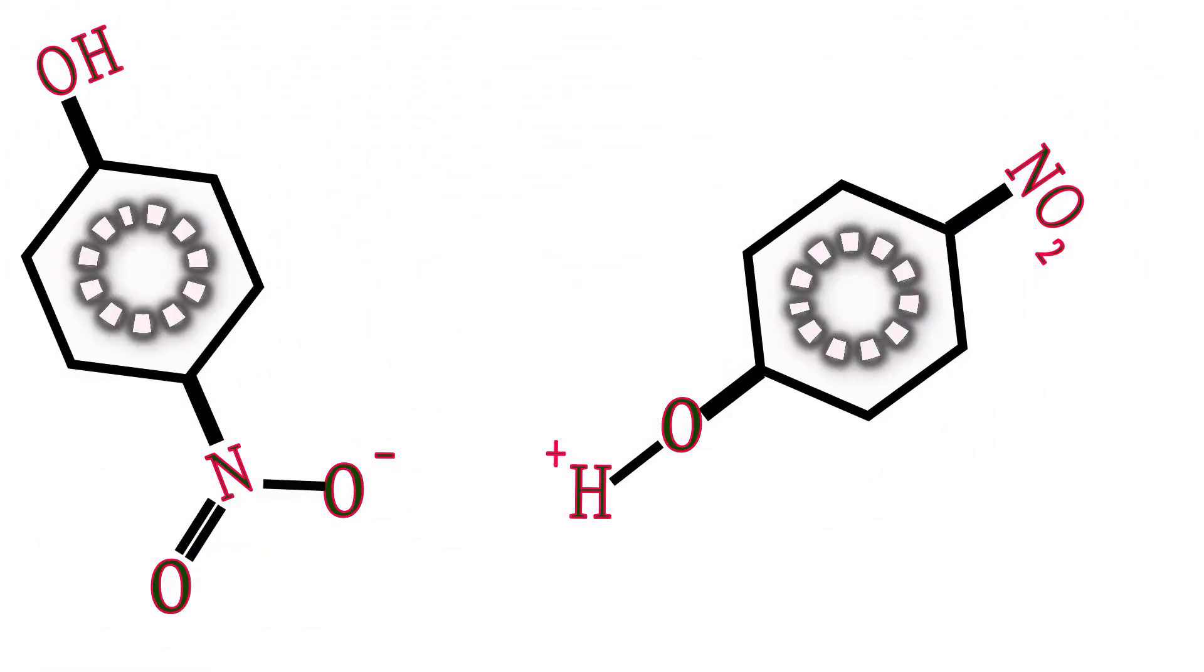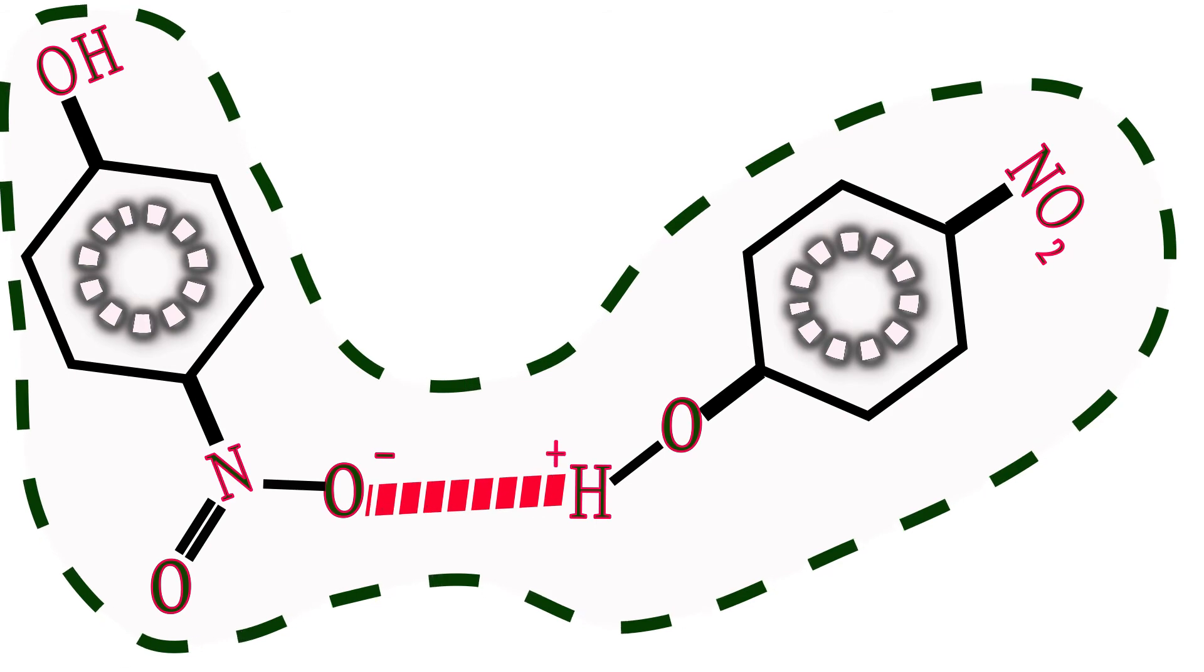Para nitrophenol forms intermolecular hydrogen bonds which causes associations of the para nitrophenol molecules.